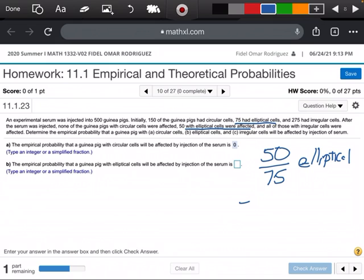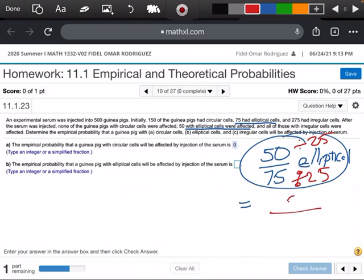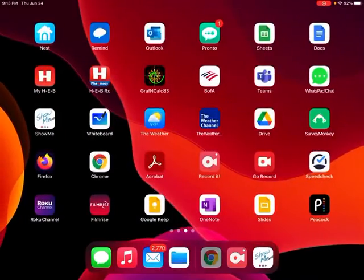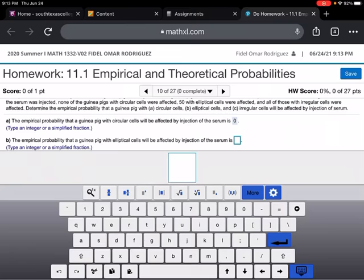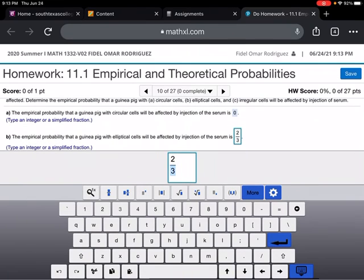So all I'm going to do is I'm going to go ahead and just simplify that fraction. So we can actually divide them both by 25. 25 goes into 50 twice and into 75 three times, so my answer is going to be two-thirds. So right here, I'm going to enter in 2 divided by 3. Check my answer. Perfect.